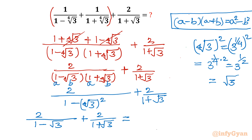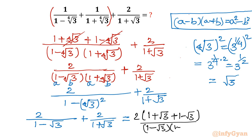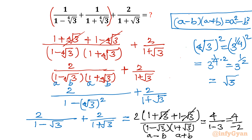Taking LCM one final time, I write 2 times (1 plus square root of 3 plus 1 minus square root of 3), all divided by (1 minus square root of 3)(1 plus square root of 3). The square root of 3 terms cancel, giving a numerator of 4. The denominator, by difference of squares, is 1 squared minus (square root 3) squared, which is 1 minus 3 equals negative 2. So 4 over negative 2 gives our final answer: negative 2.